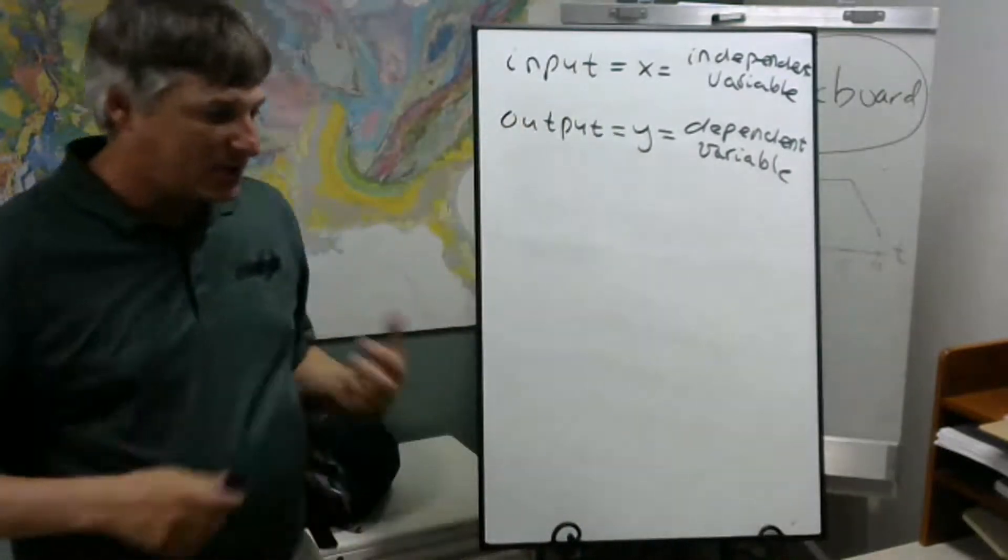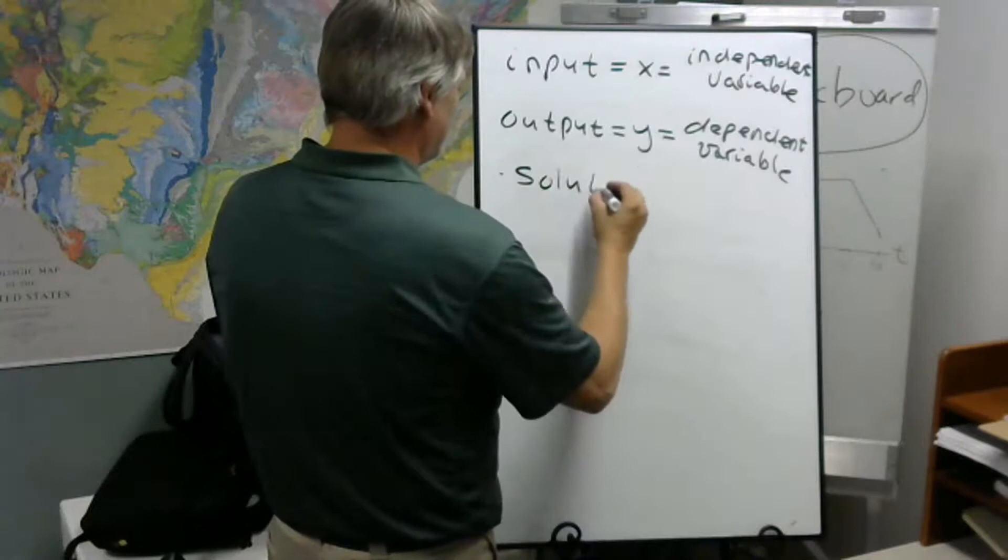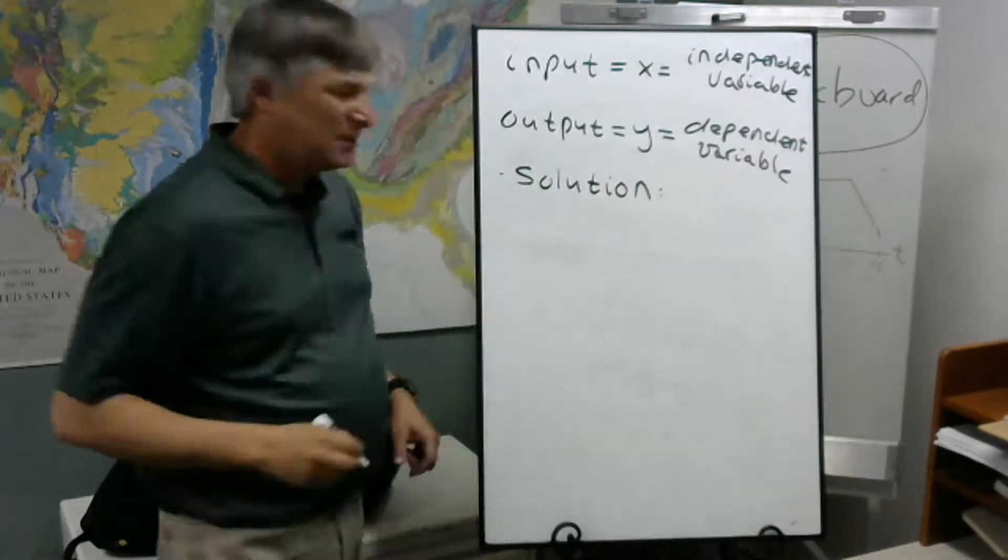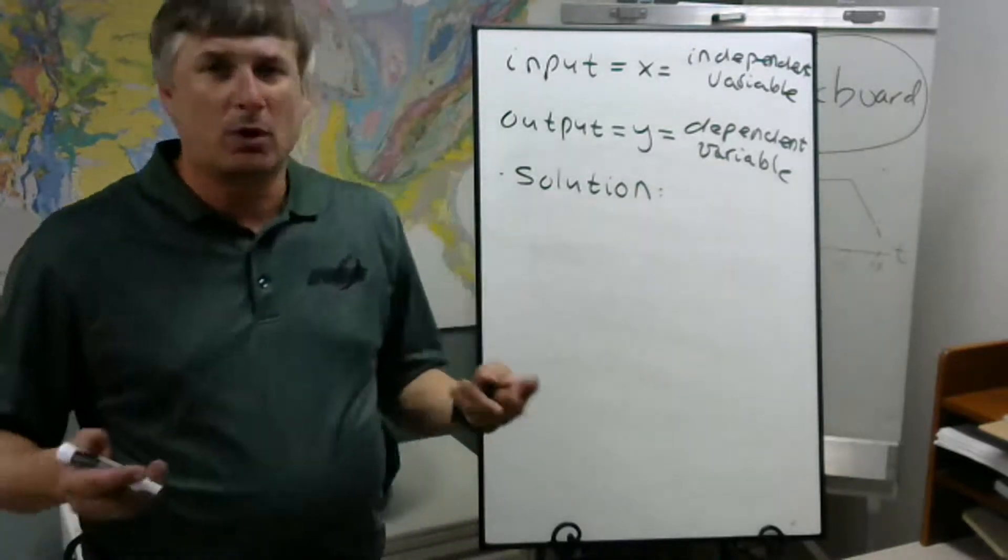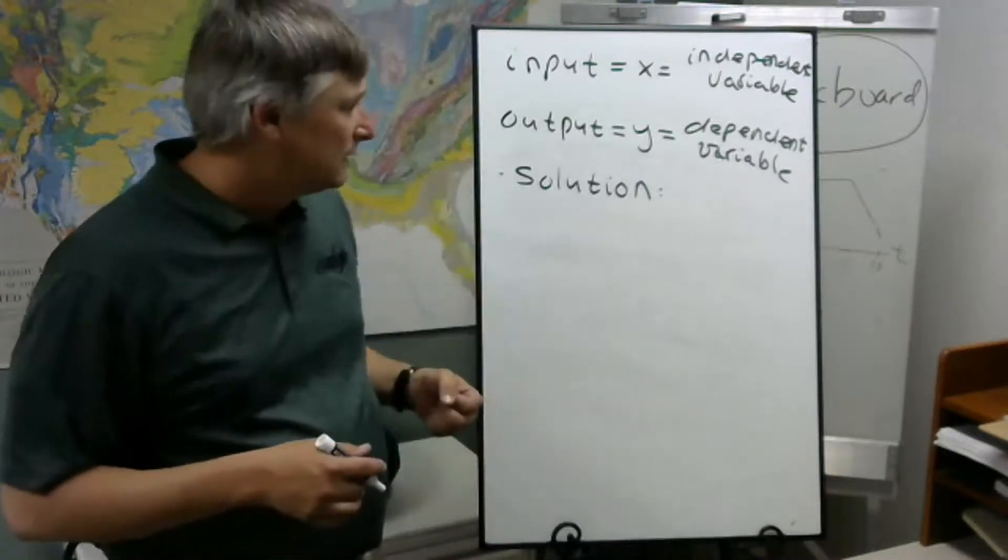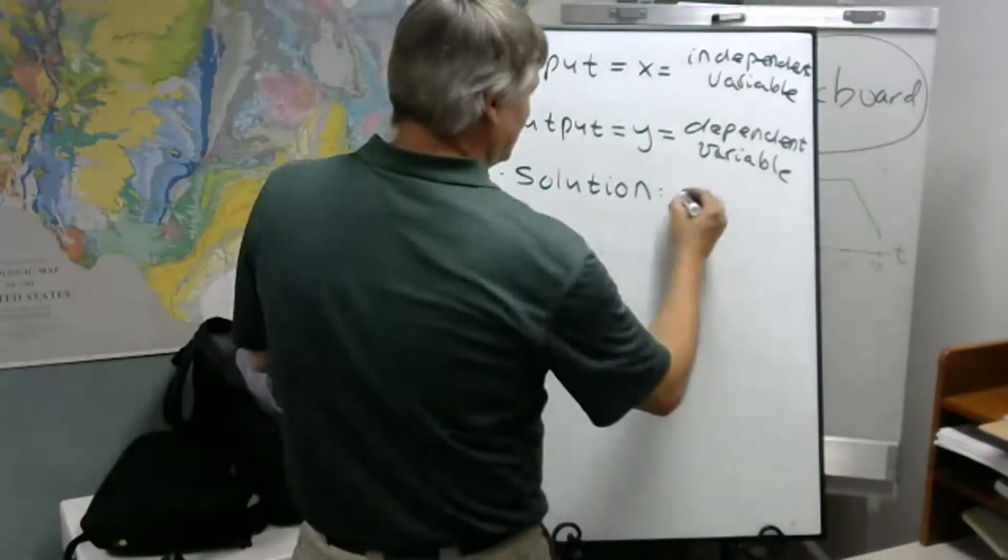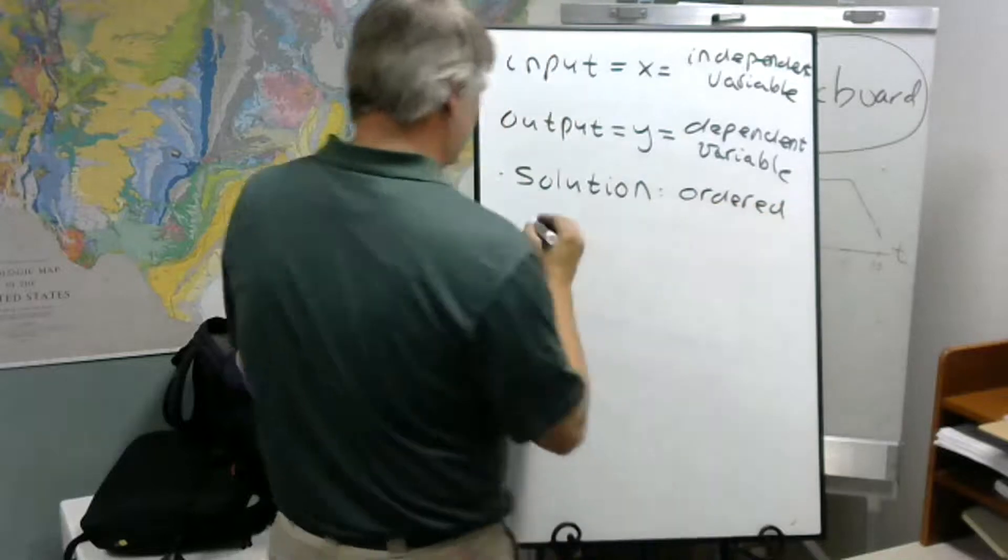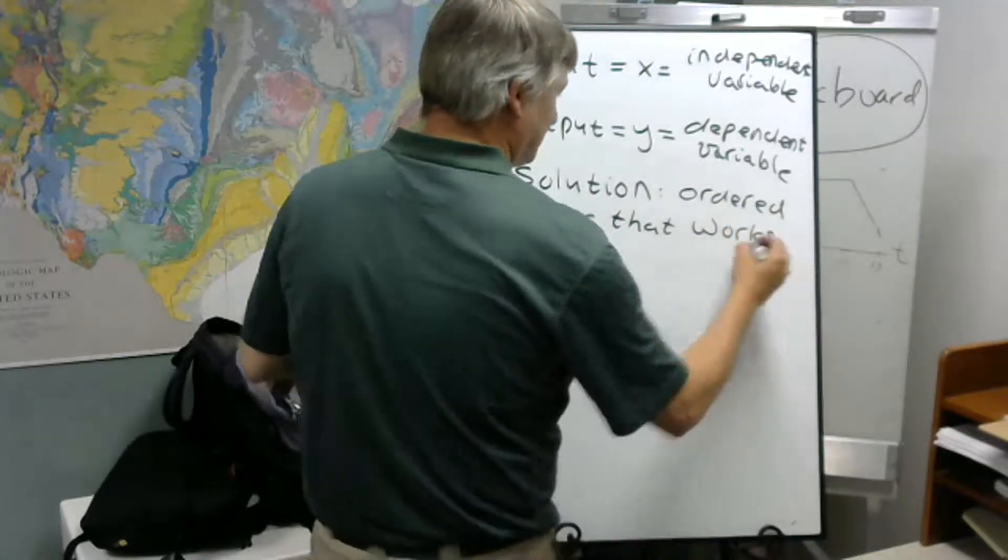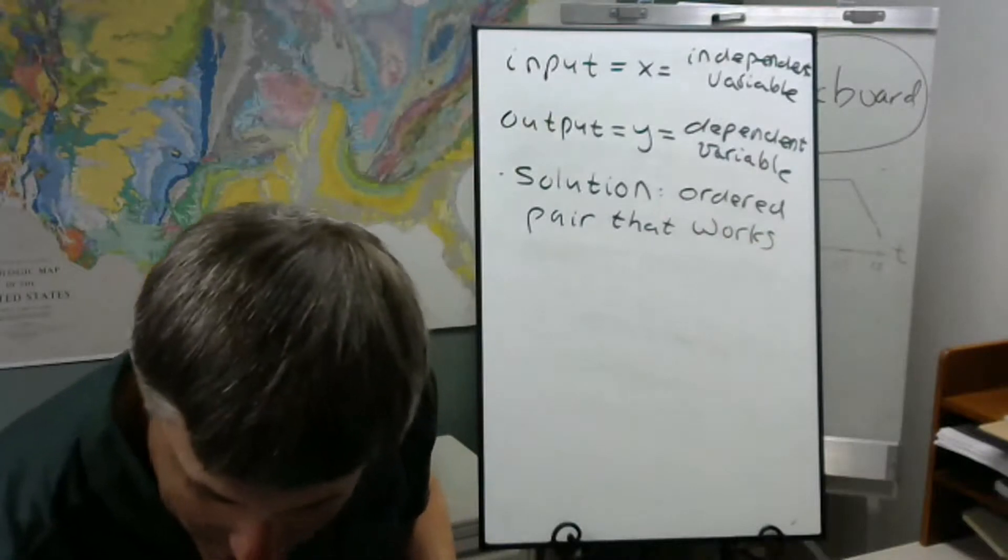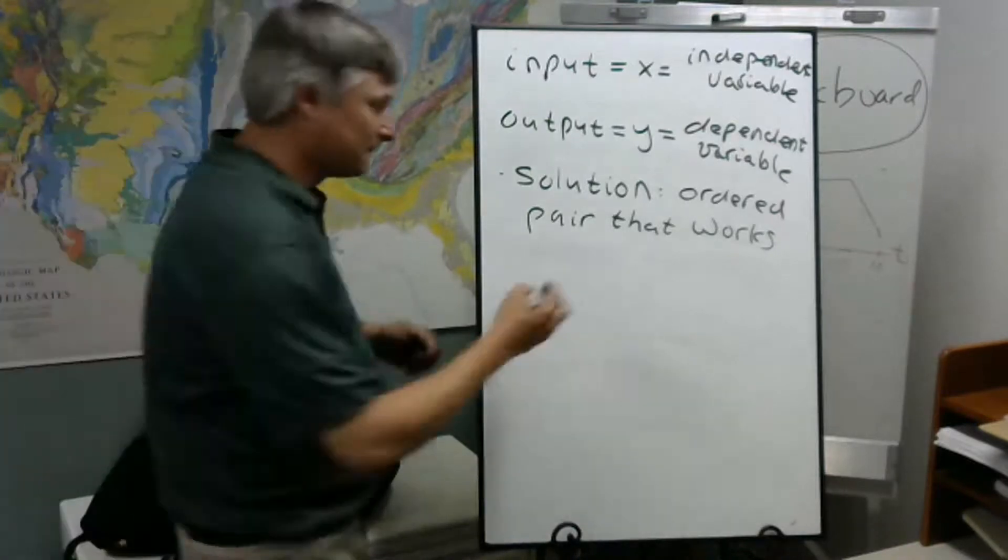Now we'll oftentimes talk about the solution to an equation. The solution to an equation is an ordered pair, an x comma y. And by the way, we call x and y coordinates, so you'll hear the x-coordinate or the y-coordinate. But it's an ordered pair of x and y coordinates that work. Because they work, they're going to satisfy the equation. So what does this mean? Well, let me show you.